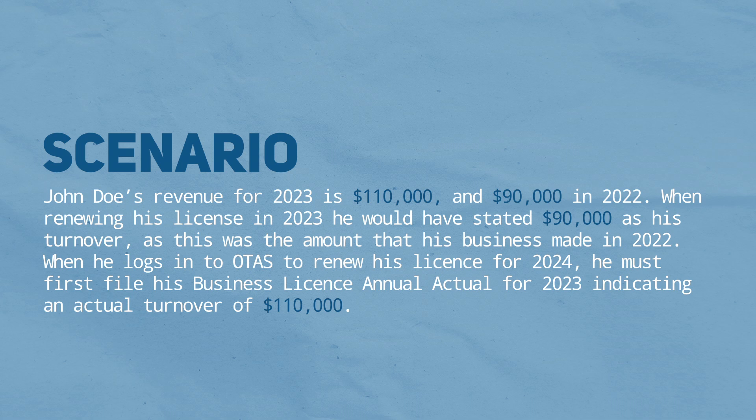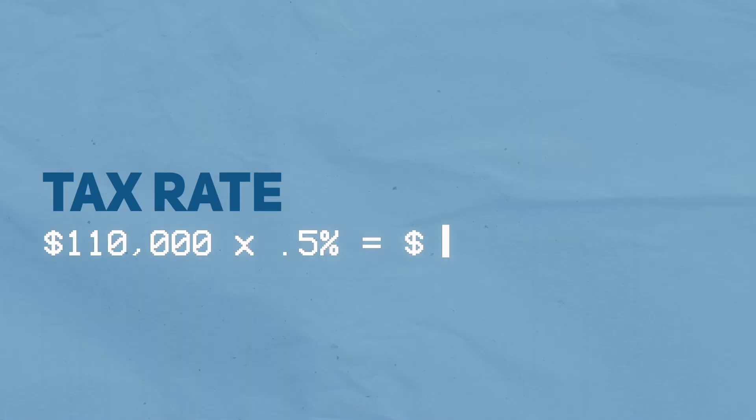When he logs into OTAS to renew his license in 2024, he must first file his Business License Annual Actual for 2023, indicating an actual turnover of $110,000. The system will then apply his tax rate, which is 0.5%, and indicate that he has a balance of $550 for 2023, which should be paid by April 2, 2024.